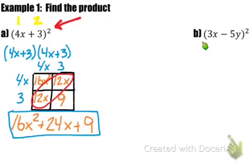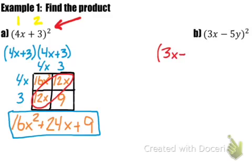Now in part B, we're going to multiply out the quantity 3x minus 5y squared. We're going to rewrite and expand it so we know what we're actually multiplying out: 3x minus 5y times the quantity 3x minus 5y.